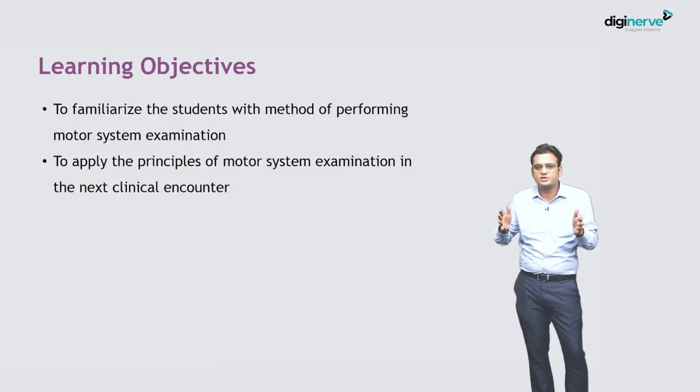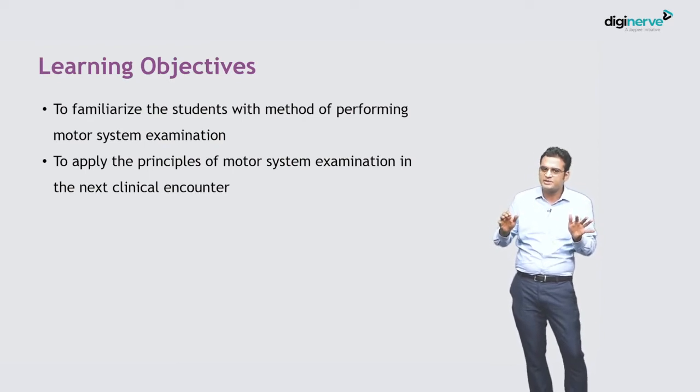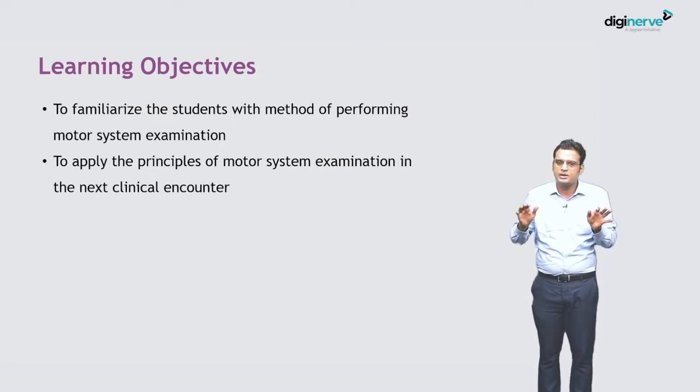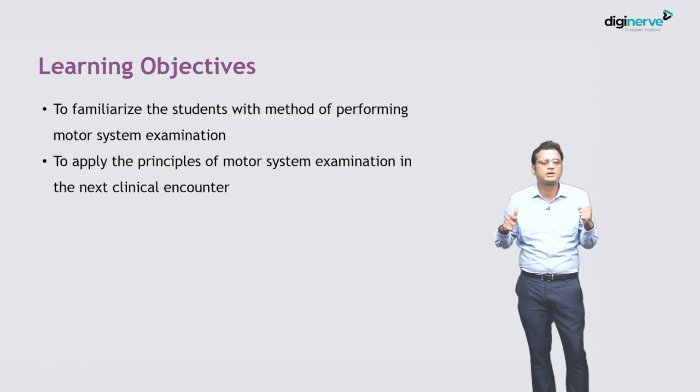Hello students, today we will be having a very interesting topic: examination of the gait and muscle bulk and tone. This is a part of motor system examination. In a motor system examination, if the patient is ambulatory we describe the gait of the patient, and if the child is non-ambulatory then we describe the posture of the patient. The learning objective of this presentation is that at the end, students will be familiar with the method of performing the motor system examination and applying the principles in the next clinical encounter.